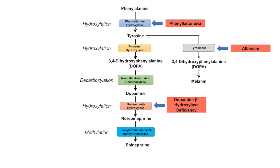Further down the pathway, mutations in the gene encoding dopamine beta-hydroxylase lead to a condition known as dopamine beta-hydroxylase deficiency. And finally, looking at the last enzyme in the pathway, phenylethanolamine N-methyltransferase, there is evidence suggesting that reduced activity or reduced amount of this enzyme can lead to higher incidences of vitiligo and Alzheimer's disease.